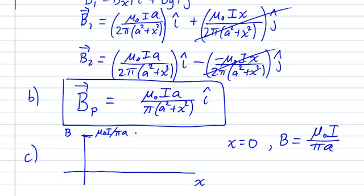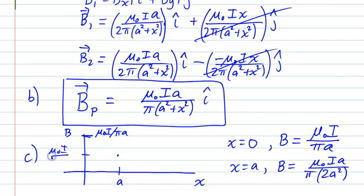And then we know that when x is equal to a, we are going to have an expression that looks kind of like this: B is equal to μ₀Ia over π times 2a². So when x is equal to a value of a, it's just going to be μ₀I over 2πa. The general trend is that we do have some sort of a turnaround or inflection, and it kind of looks like that.